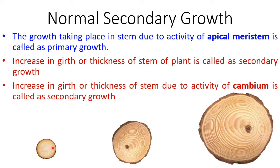You can see here in the very first picture that the stem is very small, like when a plant is growing in its first year — it is very young, less than one year old. At that time the thickness of the stem is very less and it is growing lengthwise, and such type of growth is actually called primary growth. But secondary growth is a little bit different from that.